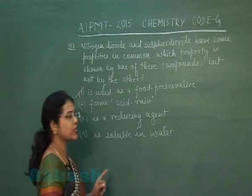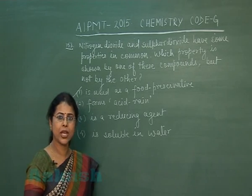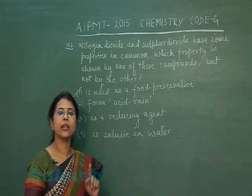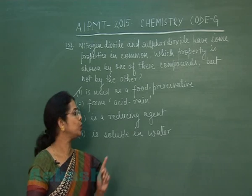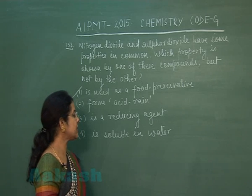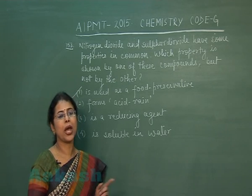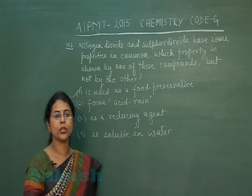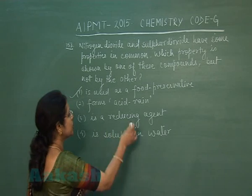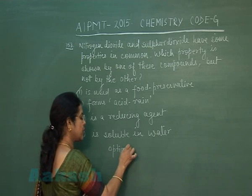The second option is: they form acid rain — both NO₂ and SO₂ form acid rain. The third option is: is a reducing agent — both NO₂ and SO₂ act as reducing agents. The fourth option is: is soluble in water — both NO₂ and SO₂ are soluble in water, forming acidic solutions. So in this question, option 1 is the correct option.